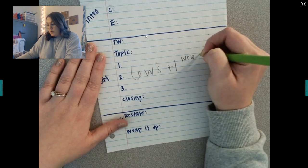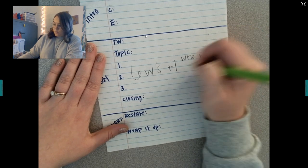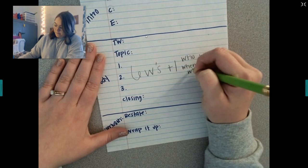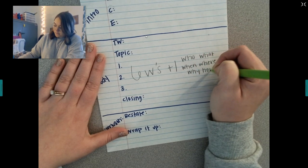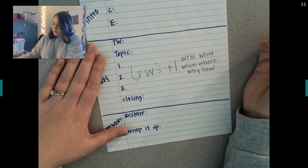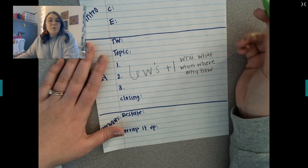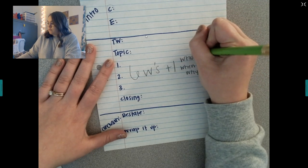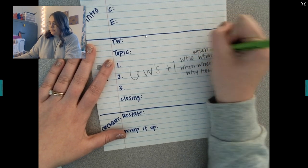That's our who, what, when, where, why, how. There's one more W, but I can't remember what it is. Who, what, when, where, why, how... which, which maybe? Yeah, which. Okay, there we go.